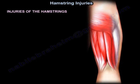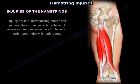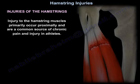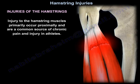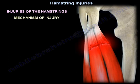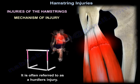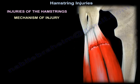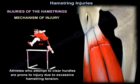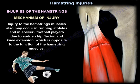Injuries to the hamstring muscles primarily occur proximally and are a common source of chronic pain and injury in athletes. The mechanism of injury is often referred to as a hurdles injury. Athletes who attempt to clear hurdles are prone to injury due to excessive hamstring tension. It also occurs in running athletes, in soccer, and in football due to sudden hip flexion and knee extension, which is the opposite to the function of the hamstring muscles.